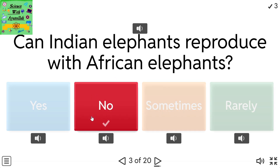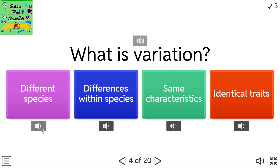What is variation? Options: different species differences, differences within a species, same characteristics, identical traits.